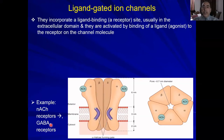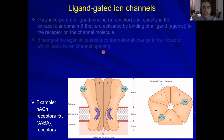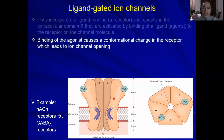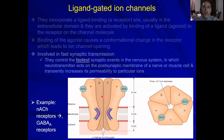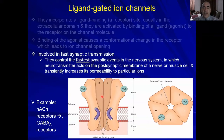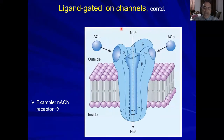GABA-B receptors are G-protein coupled receptors. Upon binding of the agonist, this causes a conformational change in the receptor, leading to opening of the ion channel. These are the fastest synaptic channels, involved in the fastest synaptic events in the nervous system. Acetylcholine acts on the post-synaptic membrane at the nicotinic acetylcholine receptor, increasing permeability to sodium. GABA-A allows passage of chloride. Another view shows acetylcholine binding to the nicotinic receptor and allowing sodium passage.